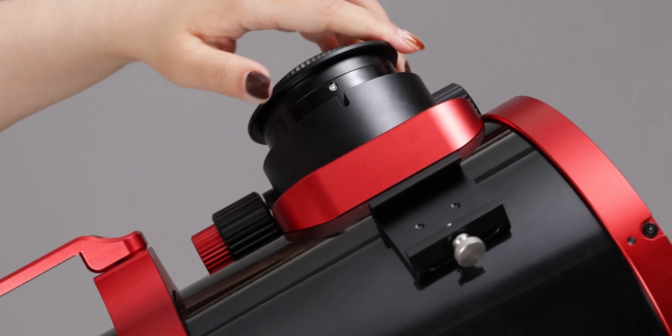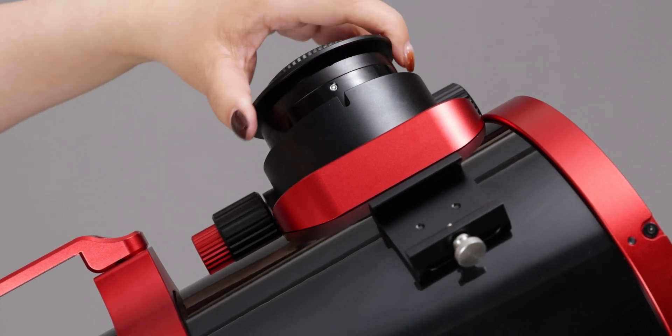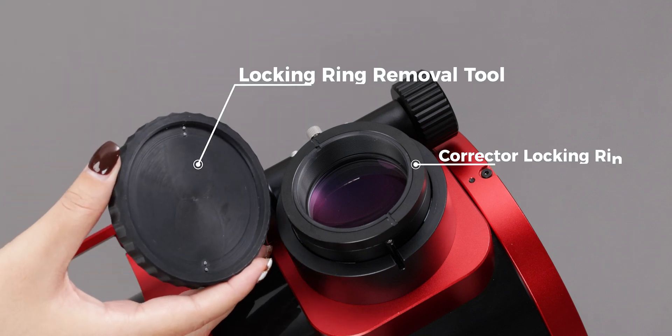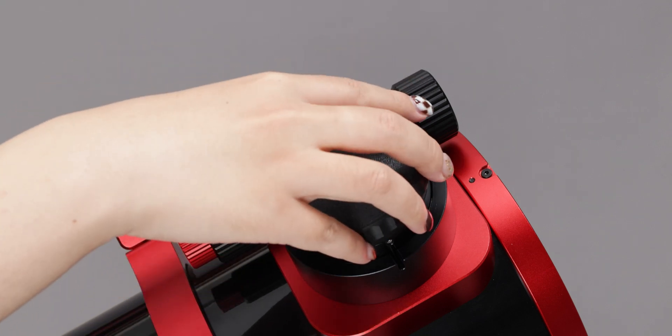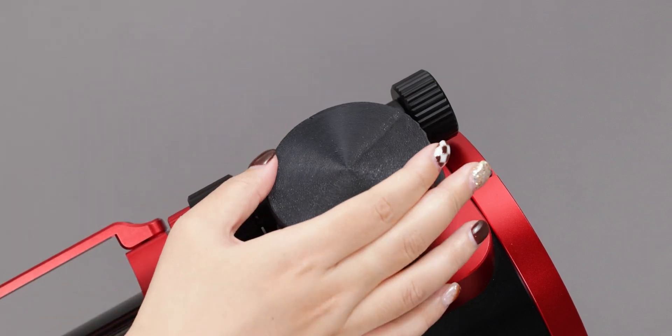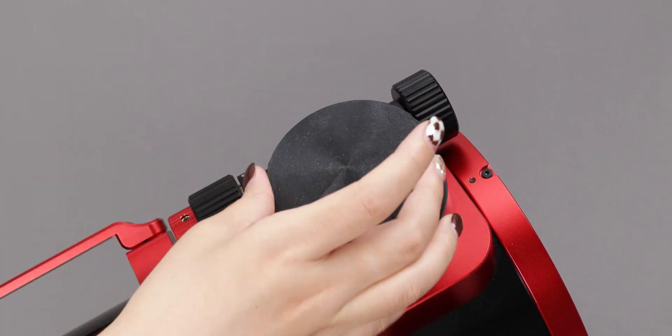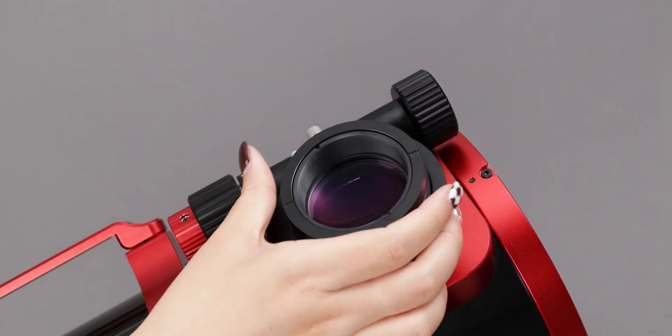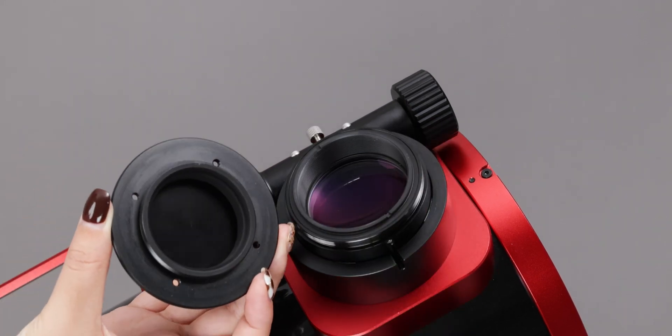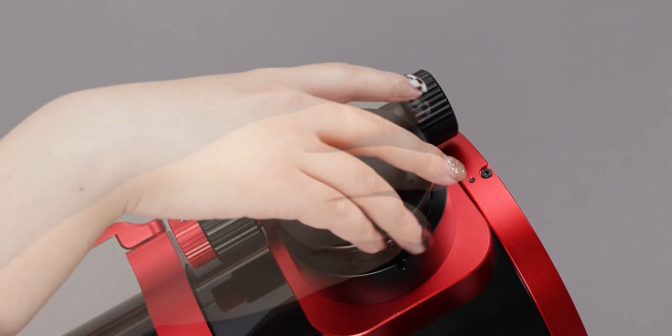Unscrew the M48 adapter. Use the locking ring removal tool to remove the corrector locking ring. Screw the M48 adapter back to the corrector.